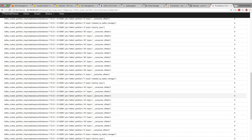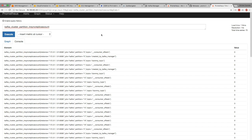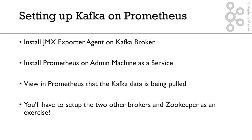As a summary, what we've done: we've installed the JMX exporter on the Kafka brokers, installed Prometheus on the administration machine as a service, and verified in Prometheus that the Kafka data is being pulled. In the next lectures, you're going to have to set up the two other brokers and Zookeeper as a fun exercise. I'll see you in the next lecture with a solution to that.